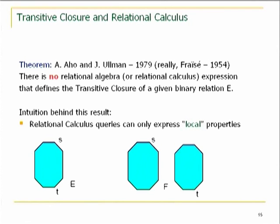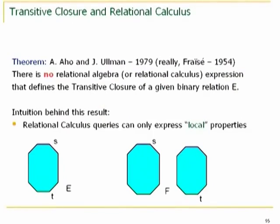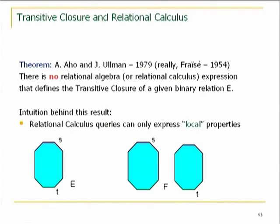In 1979, Aho and Ullmann — you can't get more distinguished computer scientists — published a paper in POPL, the top programming languages conference. They showed that no relational algebra expression can define transitive closure. They didn't know that Fraïssé knew that back in 1954. They rediscovered it and had very good intuition, essentially coming up with one of the proofs we saw here.